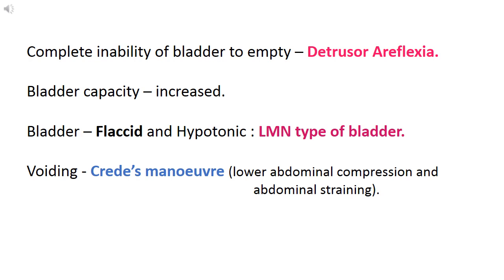Bladder capacity is increased and the bladder becomes flaccid and hypotonic. Flaccidity and hypotonicity is a feature of LMN type of lesion, so it is also called as LMN type of bladder. Voiding can be made possible by Credé's maneuver, that is lower abdominal compression and abdominal straining.